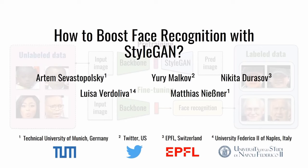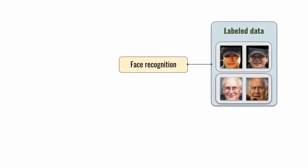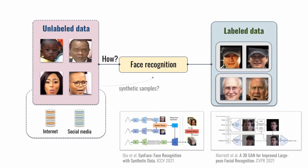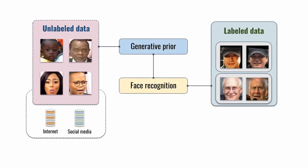We investigate the question as to whether StyleGAN can benefit face recognition. Face recognition typically requires an enormous amount of images with identity labels. Such datasets are usually comprised of celebrities and feature a limited number of distinct people. At the same time, virtually infinite amounts of faces without labels can be gathered from social media. A number of works find a way to create artificial identities from this data by augmentation-based procedures. Instead, our idea relies on learning a generative prior on the unlabeled data for subsequent face recognition training.